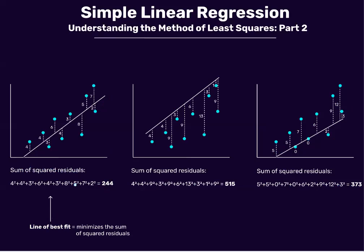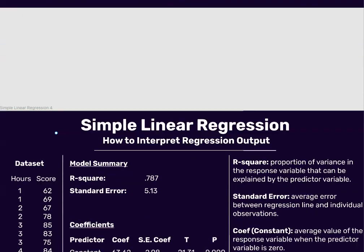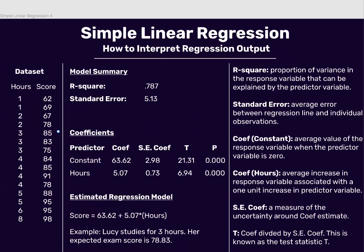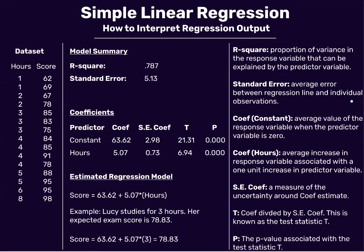If we imagine putting an infinite number of lines through this data set, these three are only a small sample of all possible lines. The line of best fit is the one that minimizes the sum of the squared residuals among all possible lines — that's what simple linear regression is doing behind the scenes. Now let's look at how to interpret regression output. You likely will never have to perform simple linear regression by hand, but you will need to use software like Excel, a TI-84 calculator, or other statistical software.